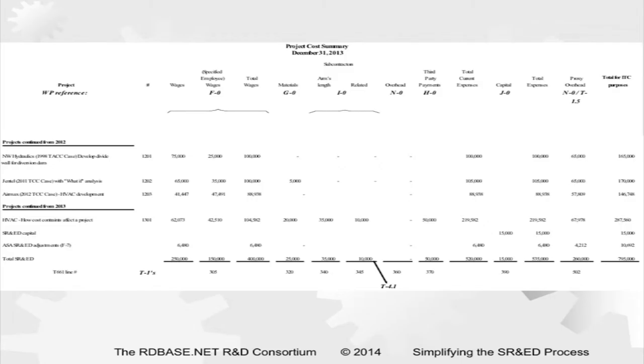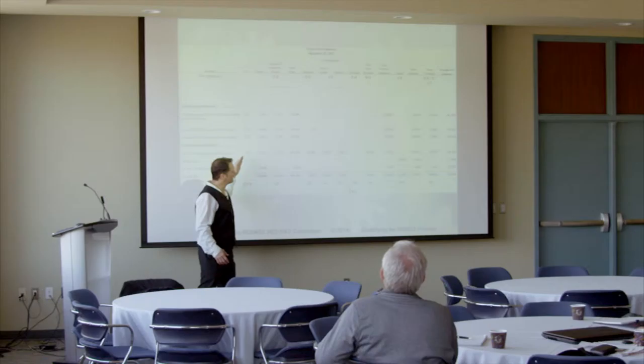Here's an outline of what we call our lead sheet — our project cost summary. We'll have projects from 2012, projects from 2013, and then we'll have all the costs: wages, materials, contractors. This will go in as part of your course materials.